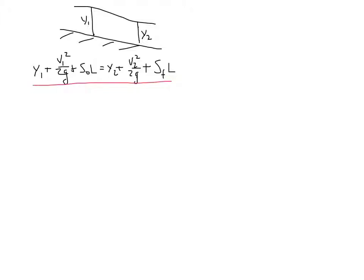The energy equation can be rewritten using the definition of the specific energy E, which is y plus v squared over 2g.